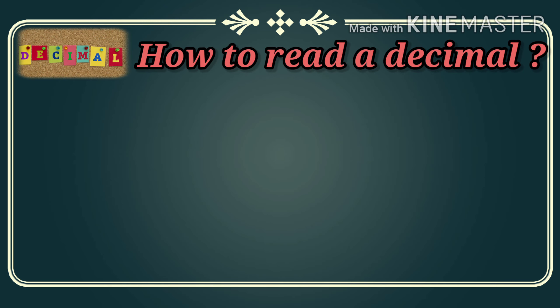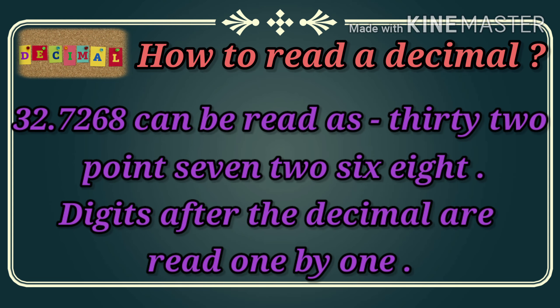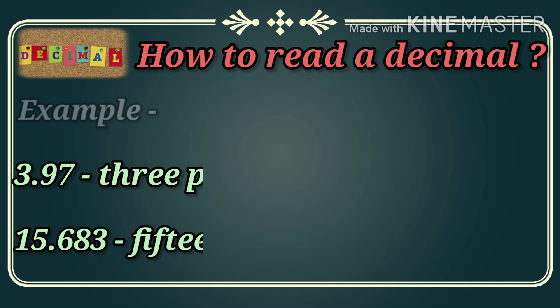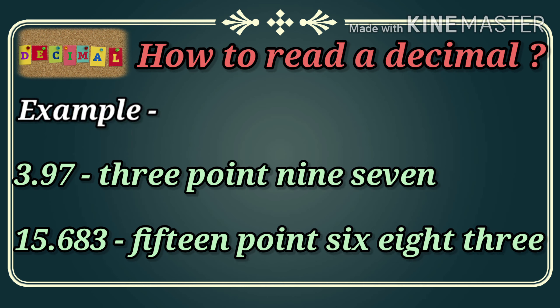How to read a decimal? See the example 32.7268. This can be read as thirty-two point seven two six eight. Digits after the decimal are read one by one. For example, 3.97 or 15.683.